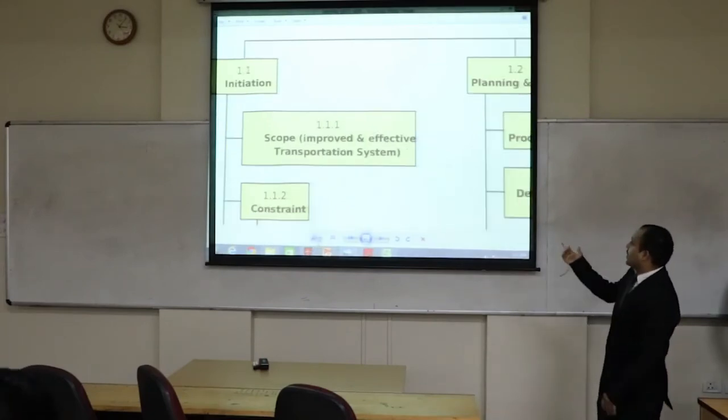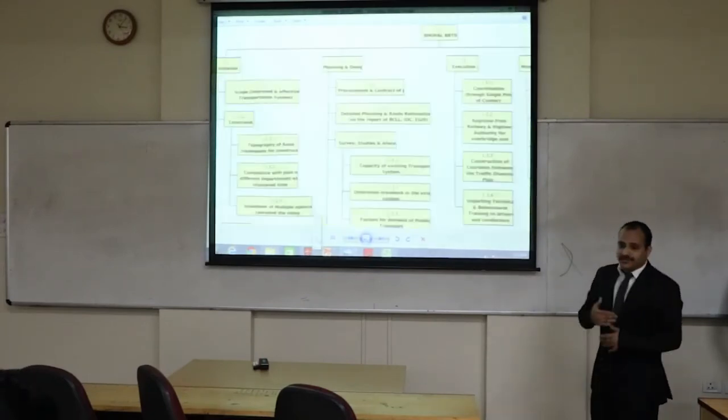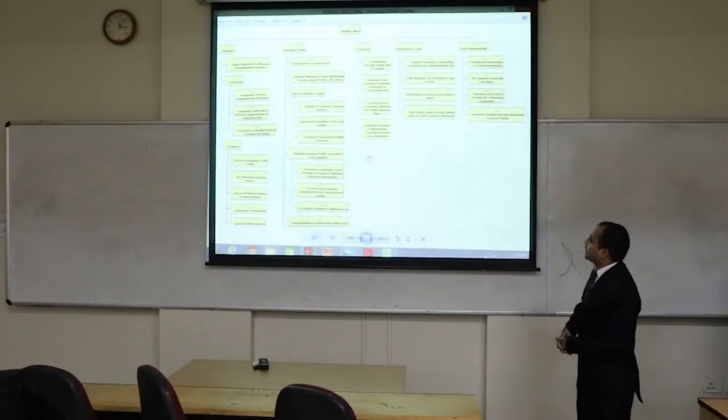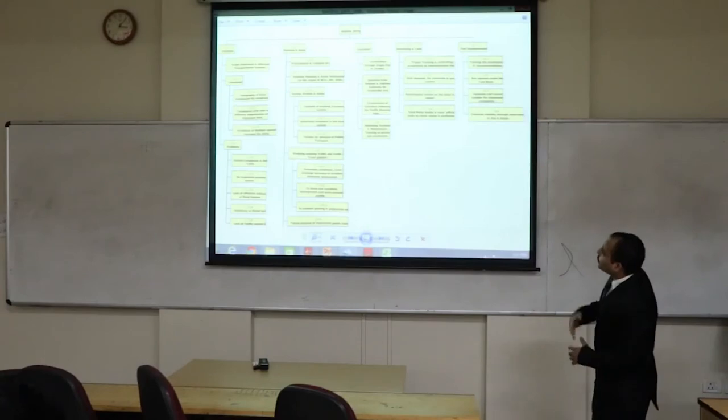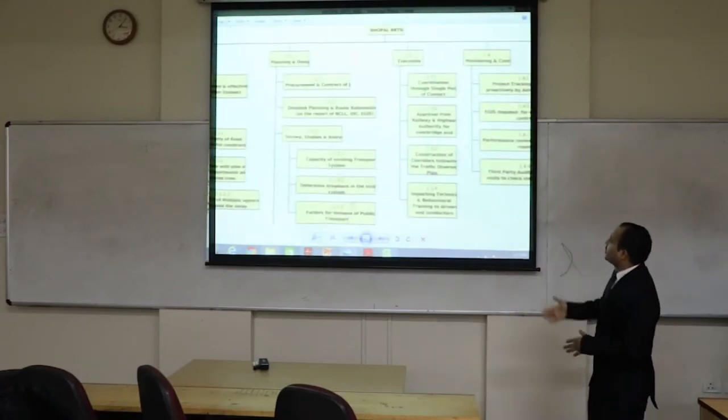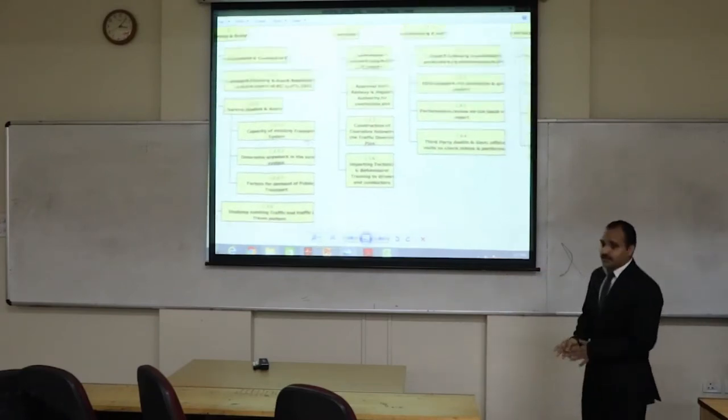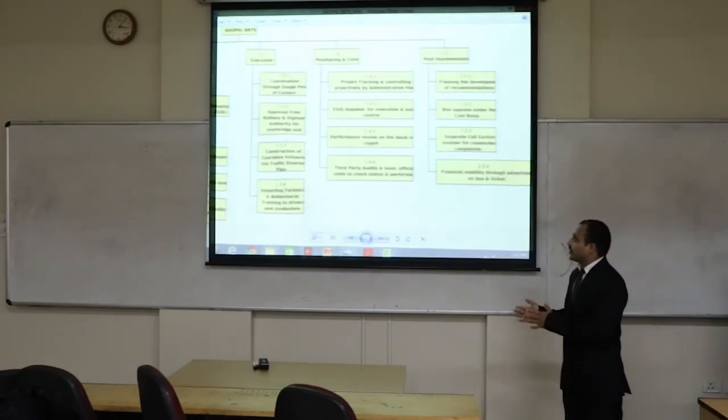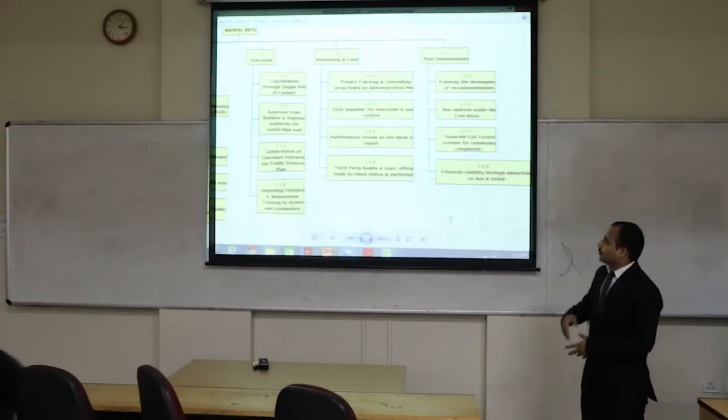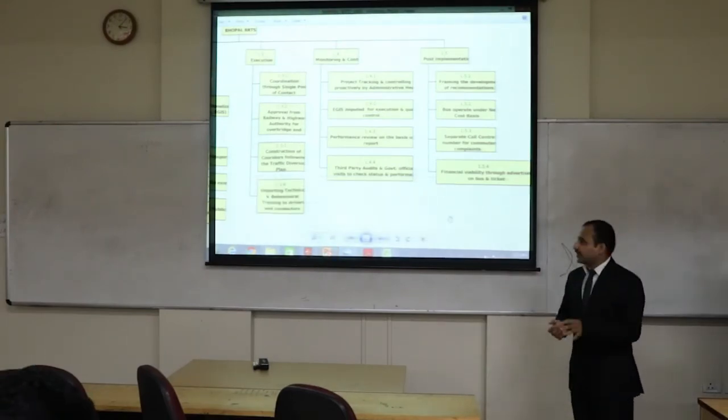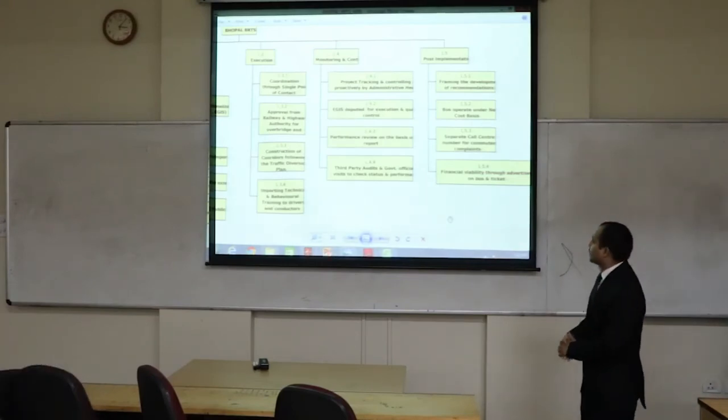In monitoring and execution, there were third parties given for execution and audit was done and supervision was done by BMC. In monitoring and control there was the main communication which was looked over, it was one of the risks also. Transparency in the system was also looked on so that there is smooth process of communication among these different departments.